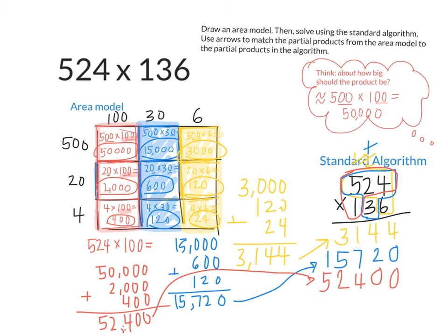How do I find the total product? I add it all up. How many 1s do I have altogether? 8. How many 10s do I have altogether? 6. How many 100s do I have altogether? 2. How many thousands do I have altogether? 11, so 1 thousand. How many 10,000s do I have altogether? 7. So my final product is 71,264. Again, we can show how all the partial products from this area model match up to the partial products from the standard algorithm.